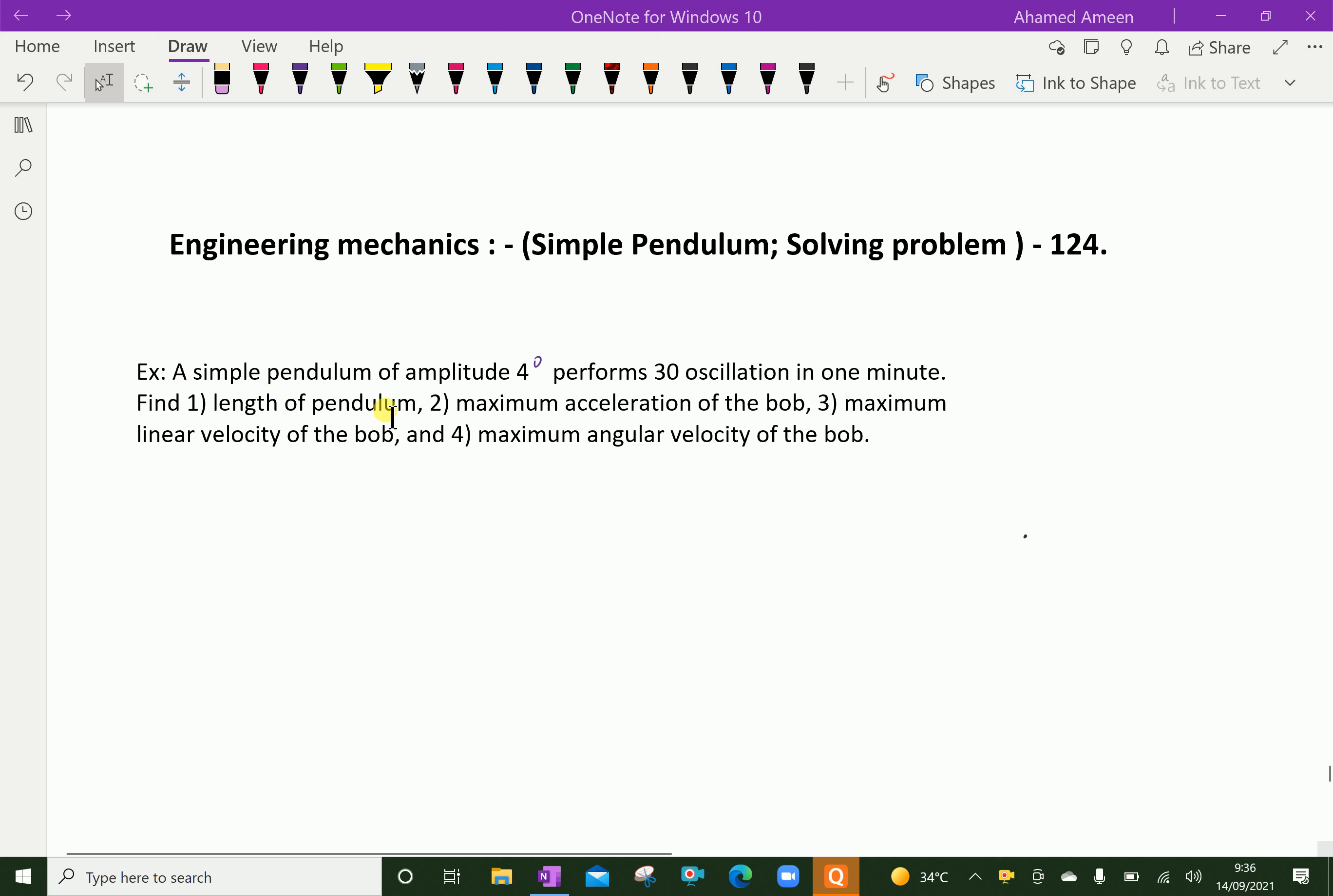A simple pendulum of amplitude 4 degrees performs 30 oscillations in 1 minute. Find length of pendulum, maximum acceleration of the bob, maximum linear velocity of the bob, and maximum angular velocity of the bob.